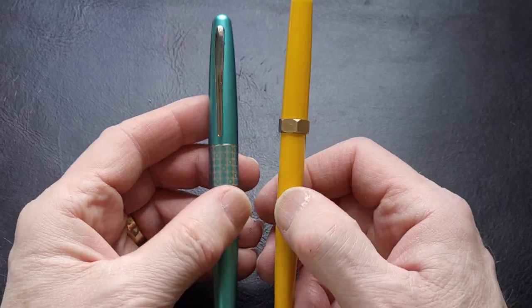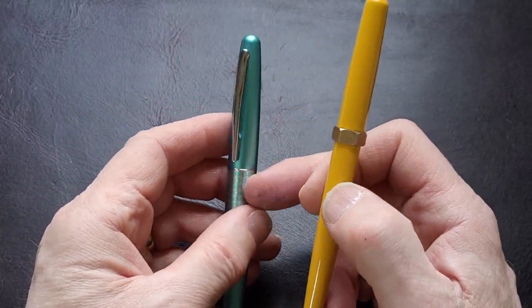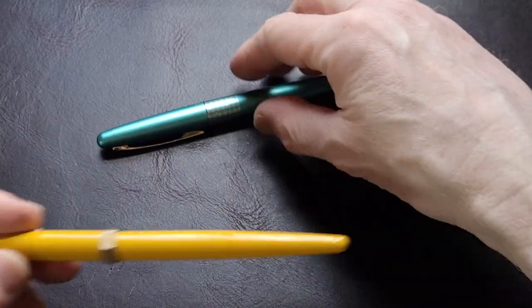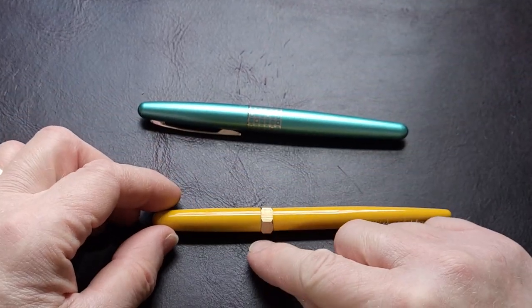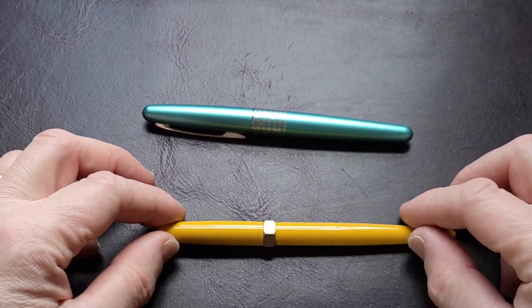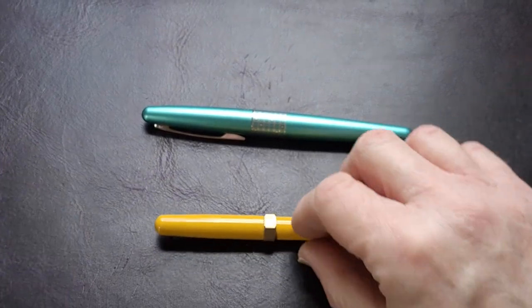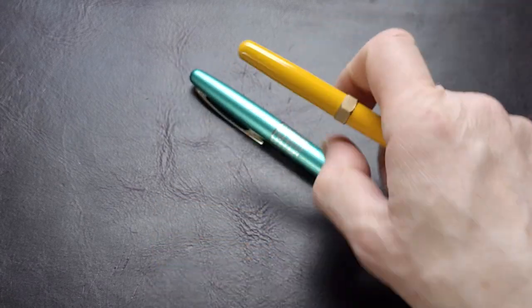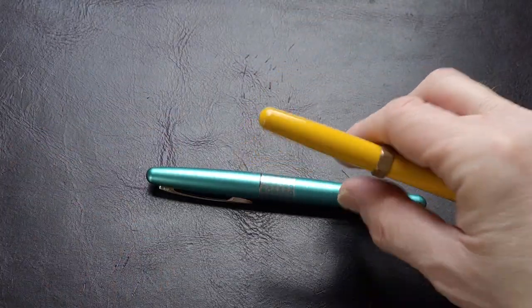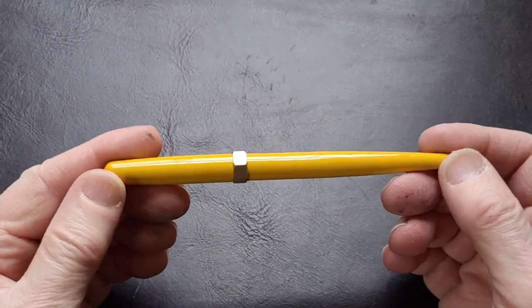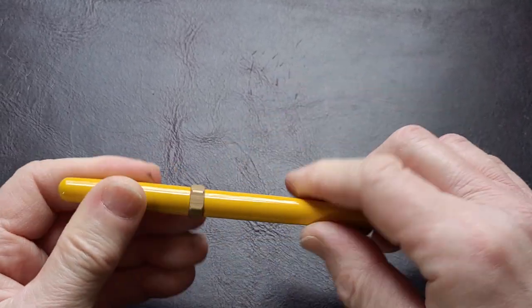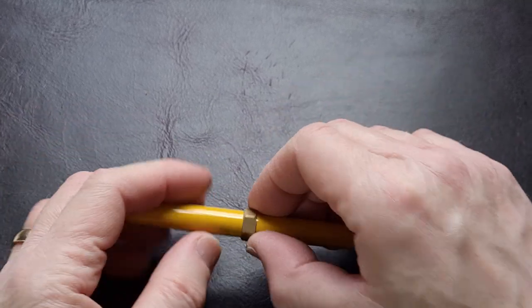The other thing that really catches your eye is the Metropolitan has a clip, and the Ferris Wheel brush doesn't have a clip but it does have essentially a brass bolt or piece right here that is designed to keep the pen from rolling off your desk. Even though a clip sticks in your shirt pocket, the original intent is it keeps the pen from rolling away. So it's a nice little feature.